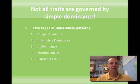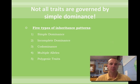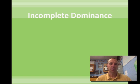So the other four possibilities are incomplete dominance, co-dominance, multiple alleles, and polygenic inheritance. I'll speak about each one of these briefly on the next slides.